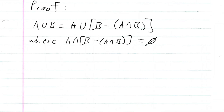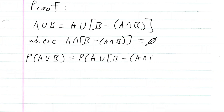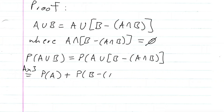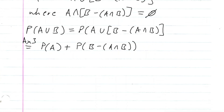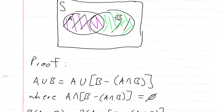Since A intersection (B minus A∩B) equals the empty set, they are mutually exclusive. So the probability of A union B equals the probability of A union (B minus A∩B), and by Axiom 3 — the union of two mutually exclusive events — this equals the probability of A plus the probability of (B minus A∩B).